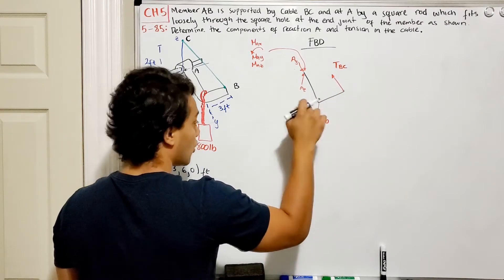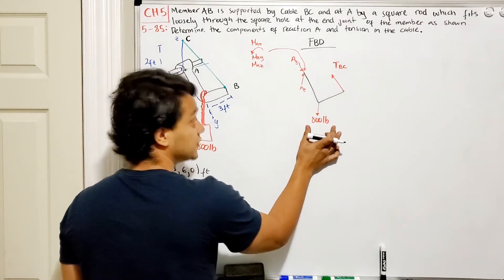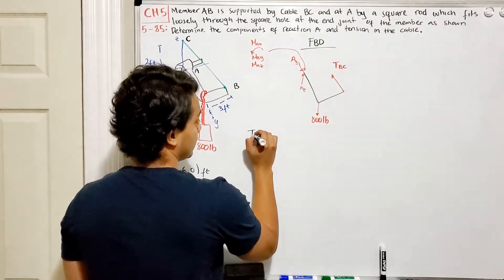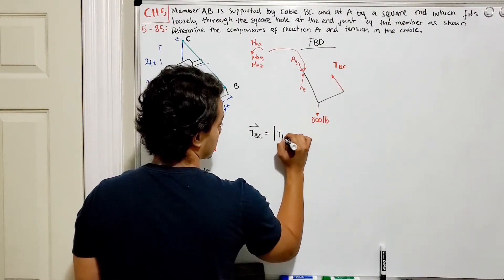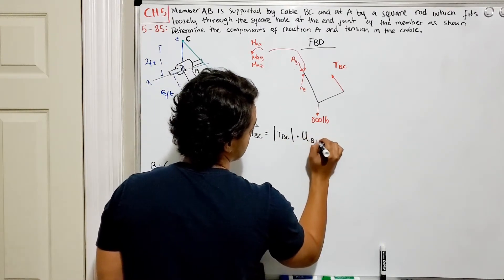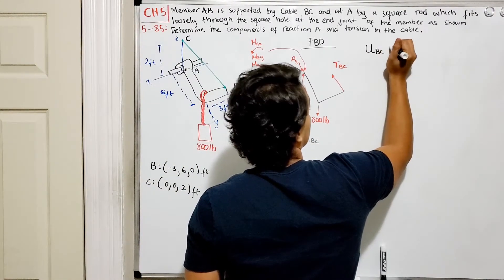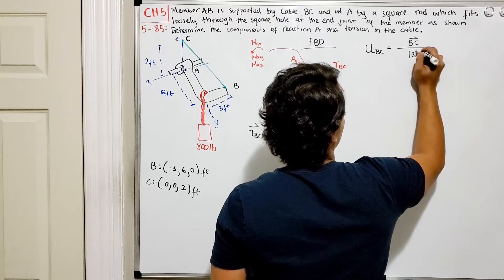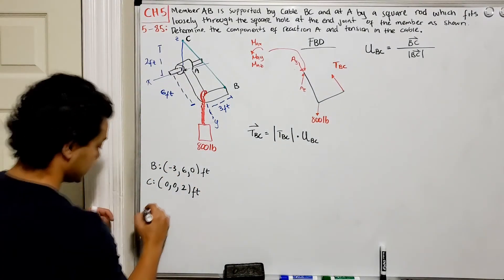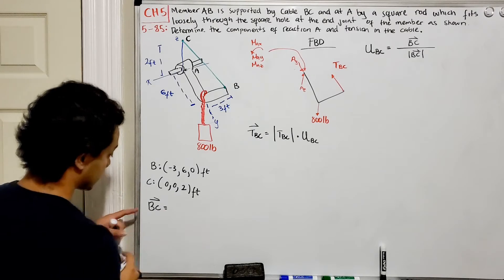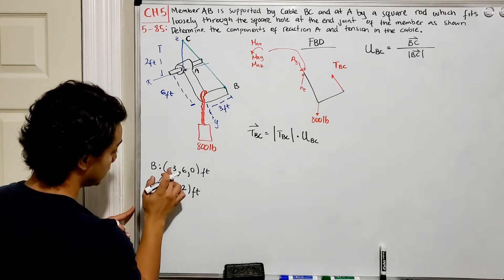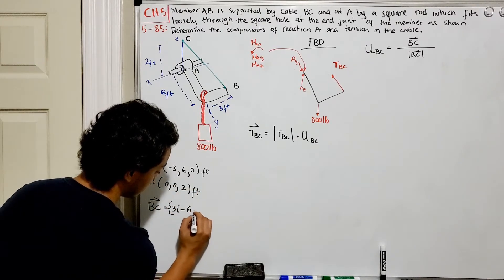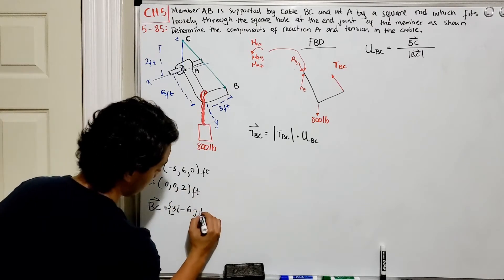The 800-pound load only acts in the z-direction, so we don't need to decompose it. But TBC has x, y, and z components. TBC equals its magnitude multiplied by the unit vector BC. To find the unit vector BC, we compute the position vector BC divided by its magnitude. BC equals C minus B: (0 − (−3)) = 3i, (0 − 6) = −6j, and (2 − 0) = 2k.